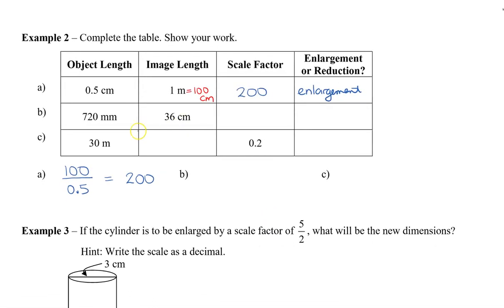In the next one we have 36 centimeters and 720 millimeters. We want to change these to the same units, so let's convert 36 centimeters by multiplying by 10 to get 360 millimeters. Now we have 360 divided by 720. We can cross off our zeros and this reduces nicely to a half. So the scale factor is 0.5 — the image is half the size of the object — which means we have a reduction.